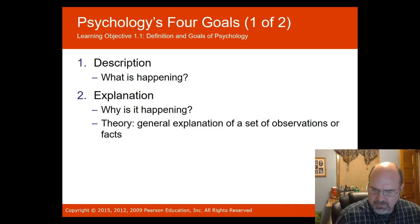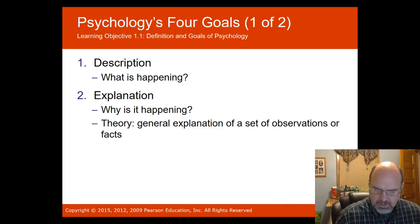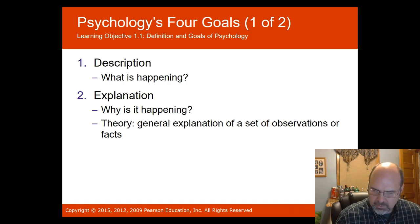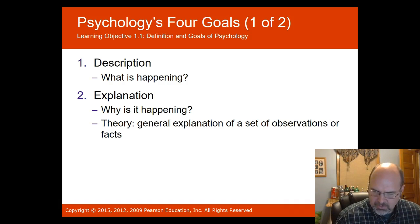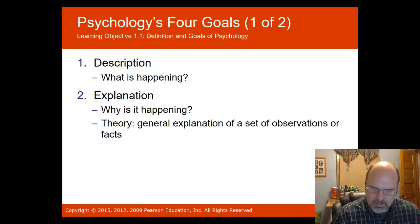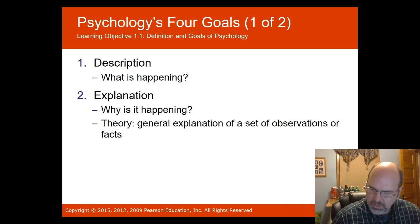Psychology's four goals are to first observe behavior — what is happening. For instance, why are so many computer scientists male? That would be a formulation of a question. The explanation involves coming up with a hypothesis — why is this happening? A theory is a general explanation or a set of observations or facts, so we try to come up with a tentative explanation to form a theory.